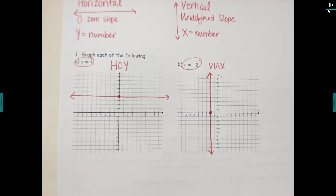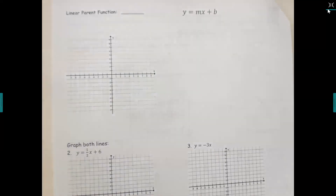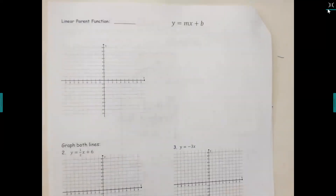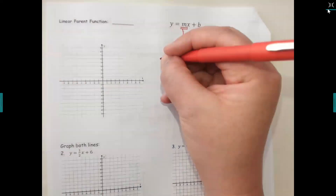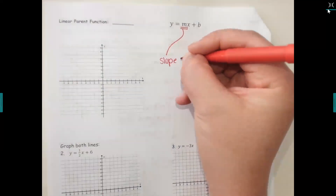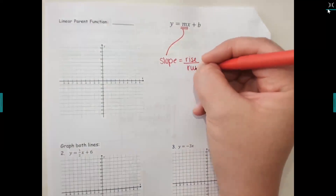If your line is not horizontal or vertical, it's going to be in the form y equals mx plus b. M is going to stand for slope, and slope is going to tell you the rise over run.